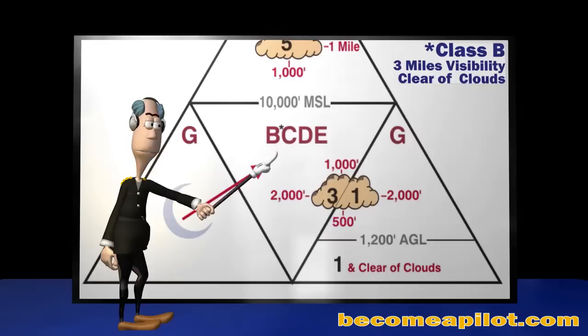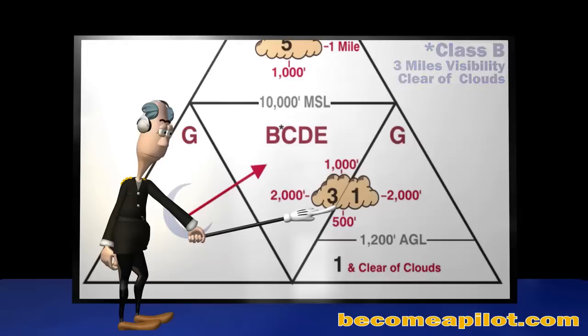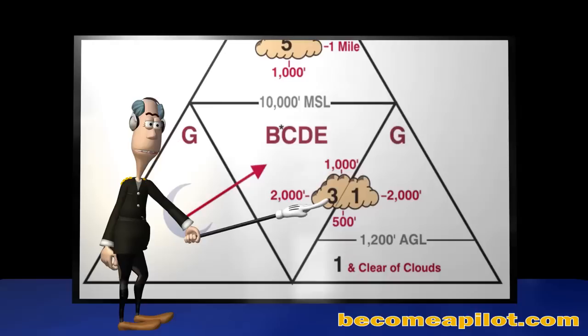A small line bisects the numbers 3 and 1 located in the cloud. The number 3 on the left side of the bisecting line is the required flight visibility in Class B, C, D, and E airspace below 10,000 feet MSL.